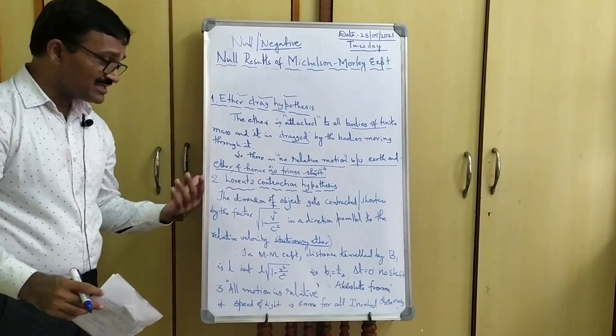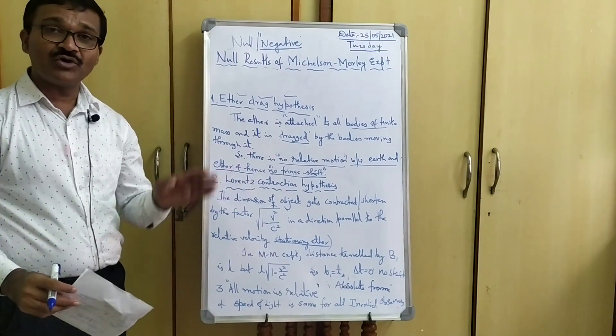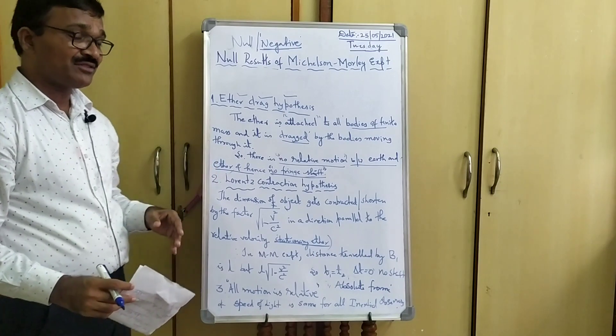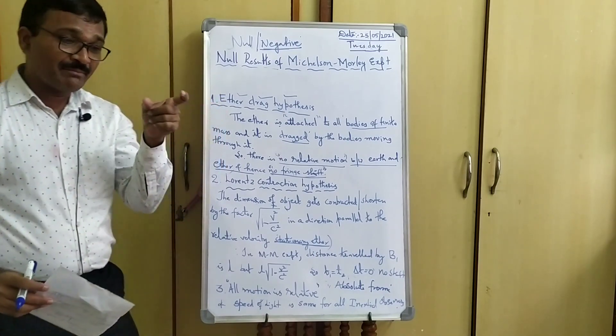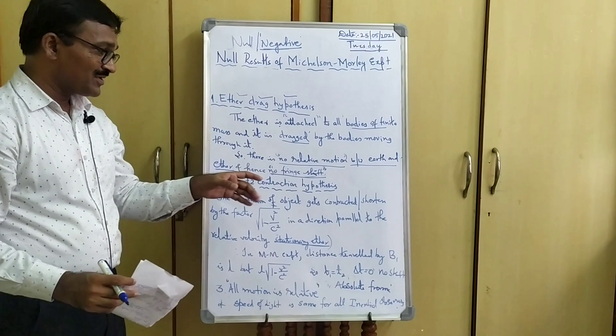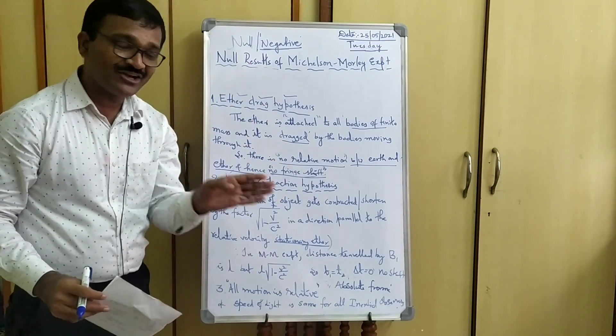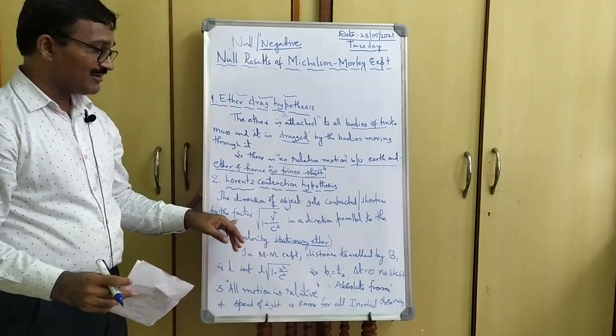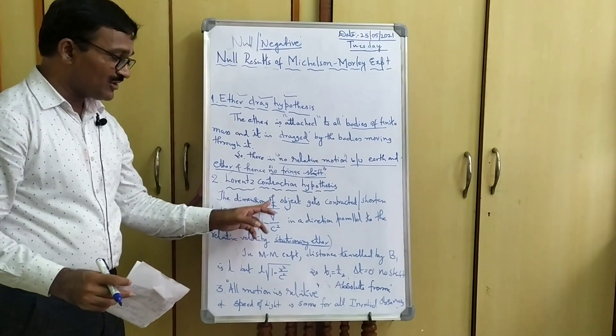Second hypothesis is Lorentz Contraction. According to Lorentz Contraction hypothesis, the dimension of the object, the magnitude of the object which is going to be contracted or shortened by the factor square root of